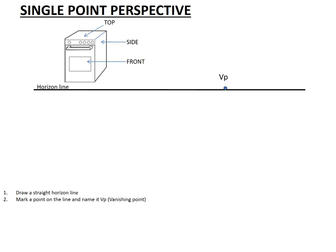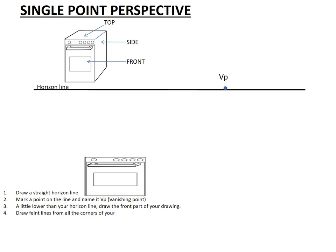Now, after doing that, we check our next step. It says a little lower than your horizon line, draw the front part of your drawing. Look at the front there. I said to you that it's important that you label it so that you know what to draw. Let's draw our front part here a little lower than the horizon line. There is our front part. It looks exactly like the way it looks up there on our object drawing. Here is our front part. Let's check the next step.